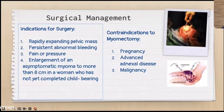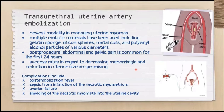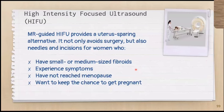For surgical management, indications include rapidly expanding pelvic mass, persistent abdominal bleeding, pain or pressure, and enlargement. A newer modality is uterine artery embolization. There is also high-intensity focused ultrasound, which is even newer and does not require surgery.